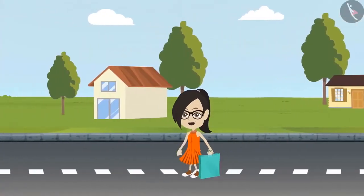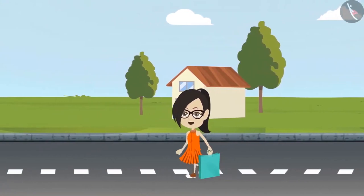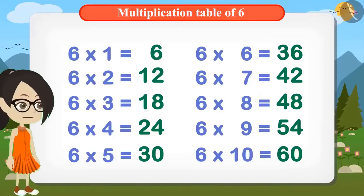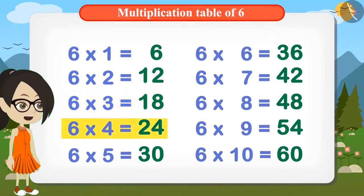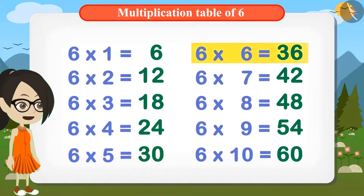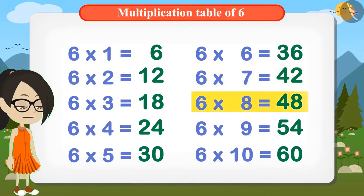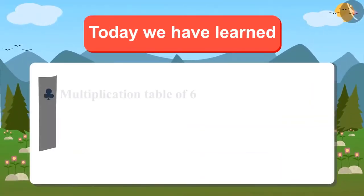Come, let's remember the table of 6 now. Speak with me: 6 ones are 6, 6 twos are 12, 6 threes are 18, 6 fours are 24, 6 fives are 30, 6 sixes are 36, 6 sevens are 42, 6 eights are 48, 6 nines are 54, 6 tens are 60.